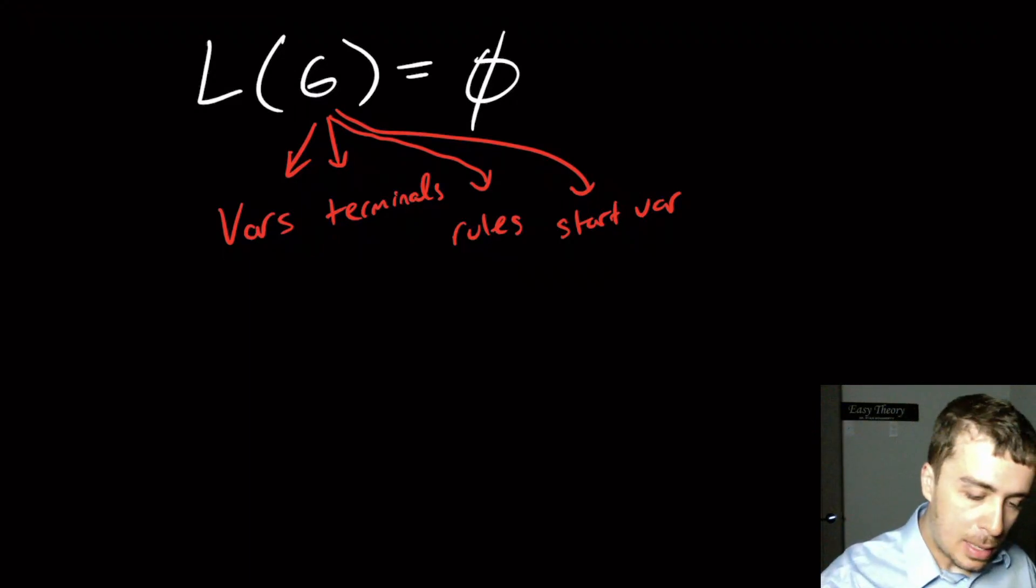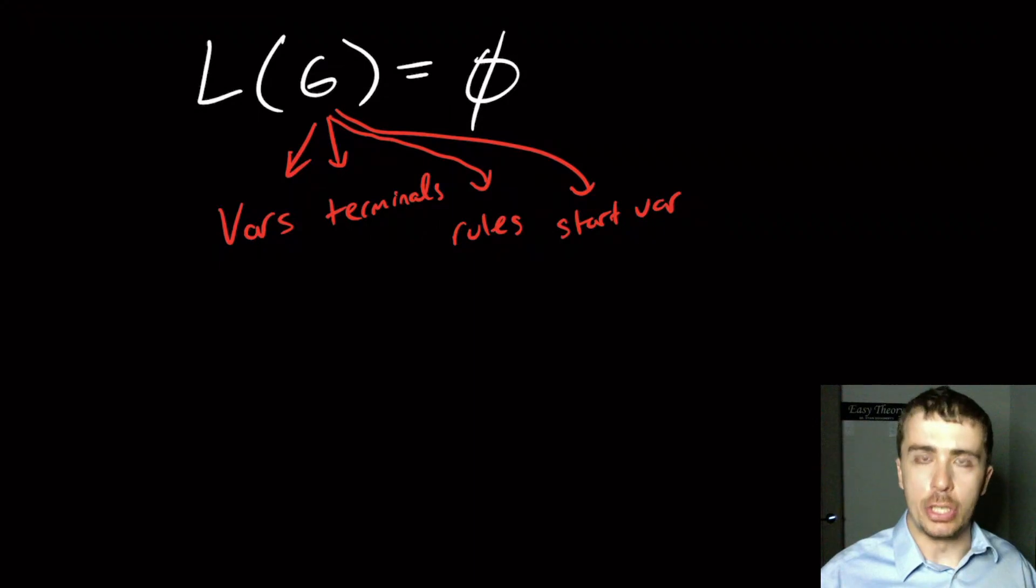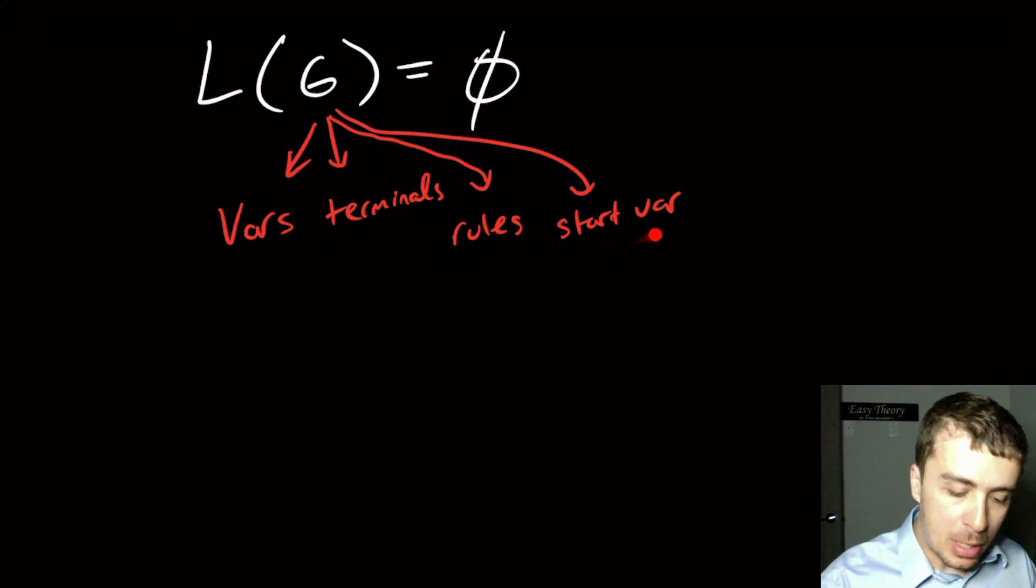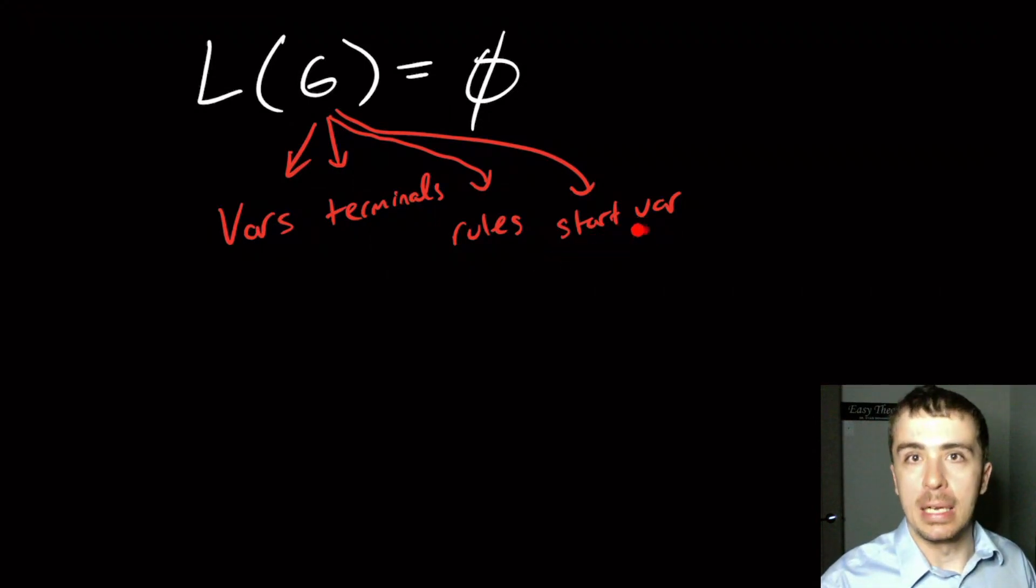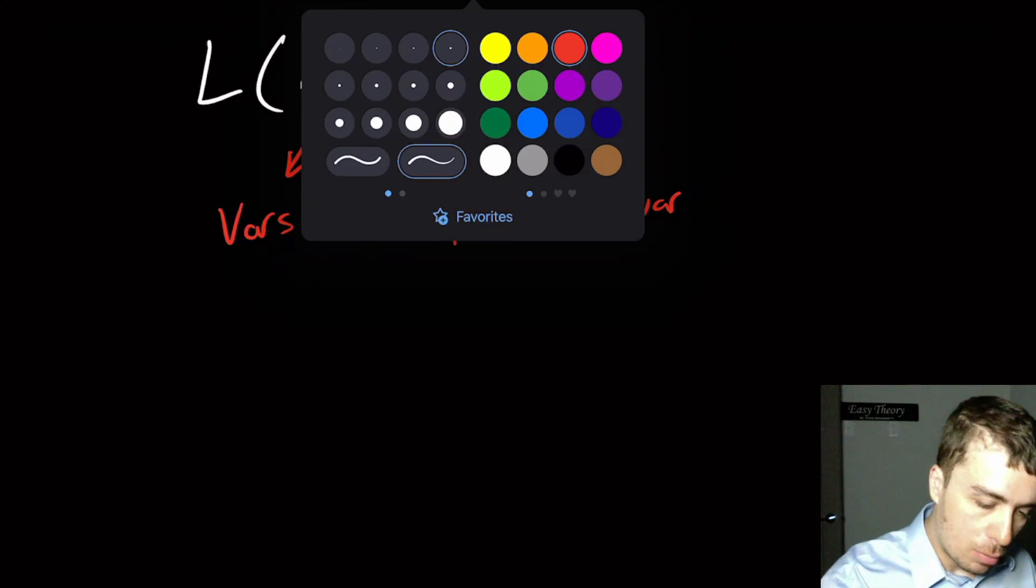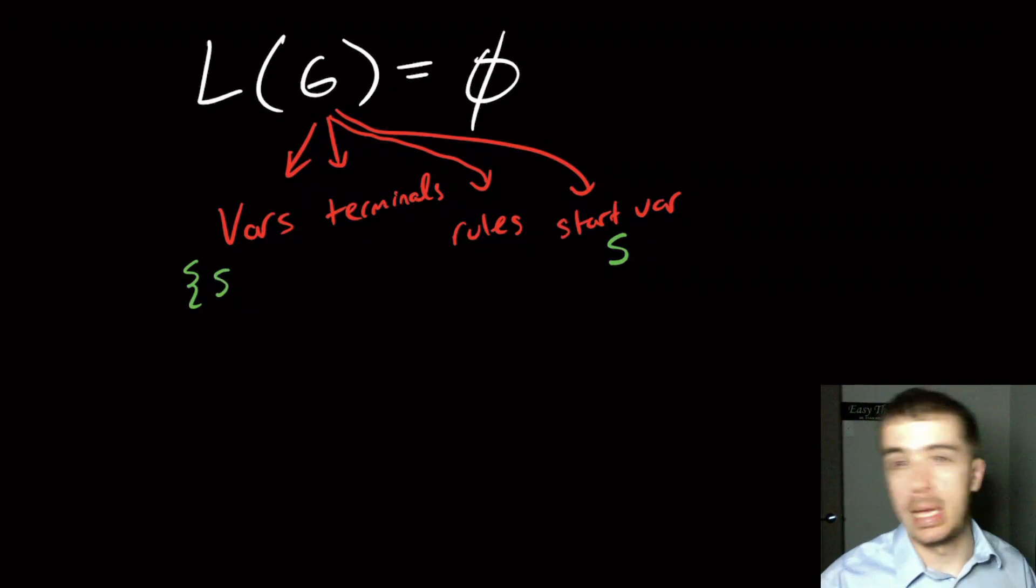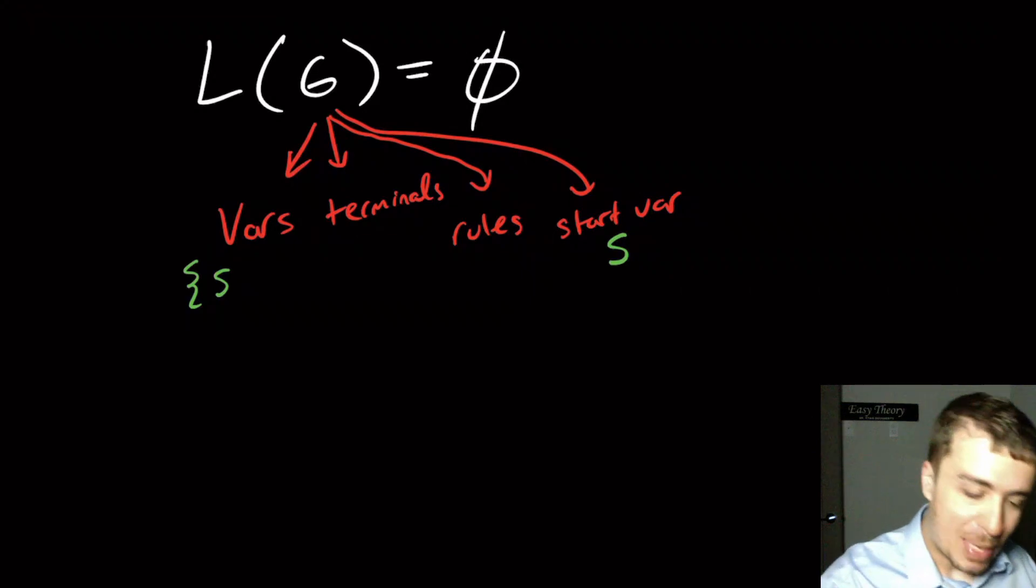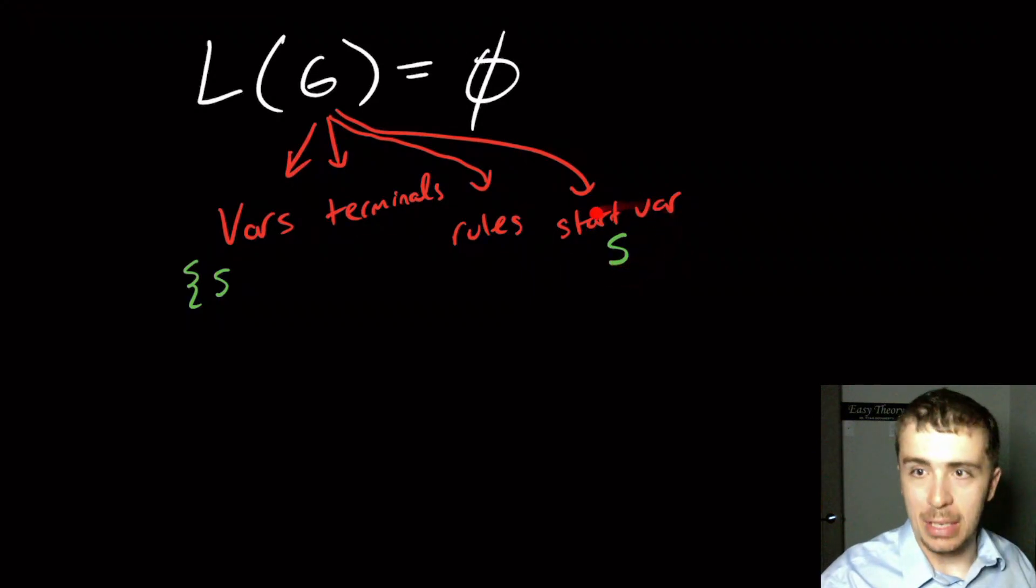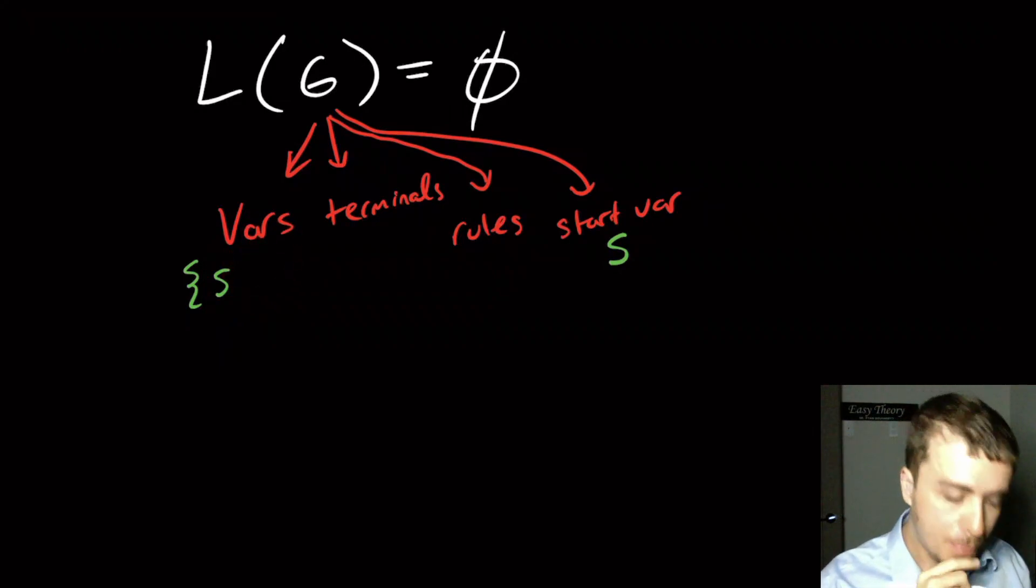So it really depends on the definition of what the context-free grammar actually is. It's unambiguous that there must be a start variable. So let's say that the start variable is S, and then that means the set of variables must include S, because there's a variable called S. But as I'll show, you can actually have more variables in the set than this.